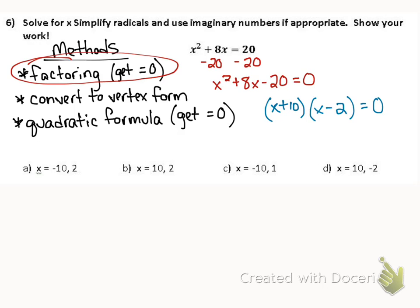Since I'm adding to a positive 8, that means the bigger number between my choices, 10 and negative 2, the bigger number 10 is the one that needs to be positive.